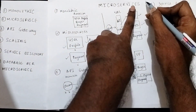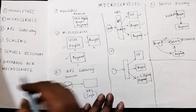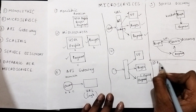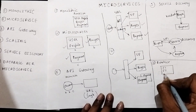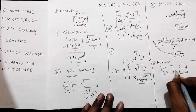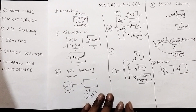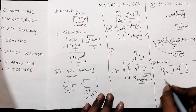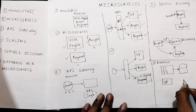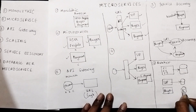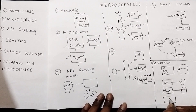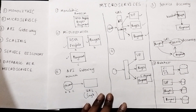Let's discuss our last topic, which is database per microservice. In a monolithic application, we have one big application with multiple features — feature one, feature two, and feature three — and it has only one shared database. With microservices, the user profile microservice has its own separate database, the buyer microservice has a separate database, and the payment microservice has its own separate database. As you can see, there is a separate database for each microservice and they do not share the database with each other.